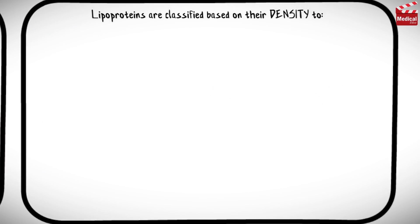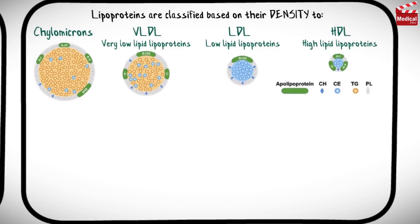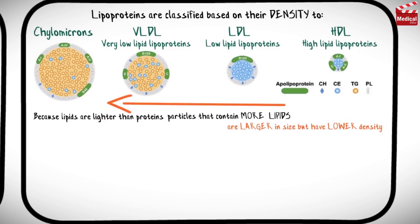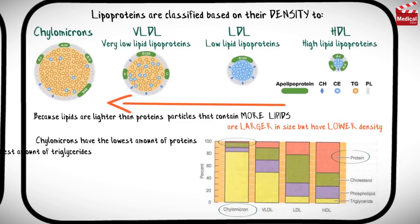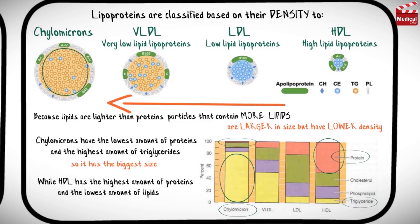Lipoproteins are classified based on their density into chylomicrons, VLDL (very low density lipoproteins), LDL (low density lipoproteins), and HDL (high density lipoproteins). Because lipids are lighter than proteins, particles that contain more lipids are larger in size but have lower density. For example, chylomicrons have the lowest amount of proteins and the highest amount of triglycerides, so they have the biggest size, while HDL has the highest amount of proteins and the lowest amount of lipids, so it has the smallest size.